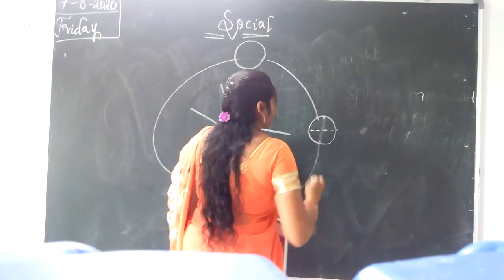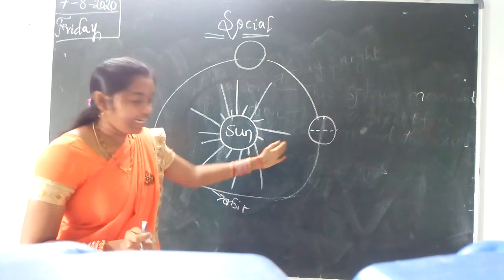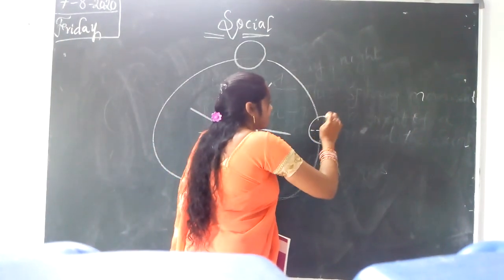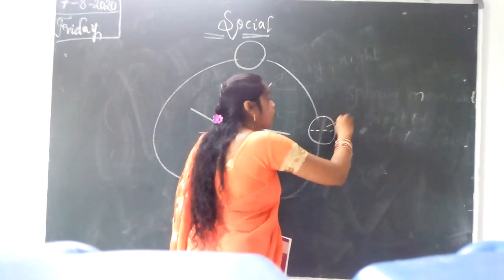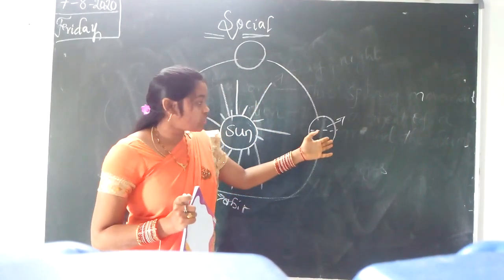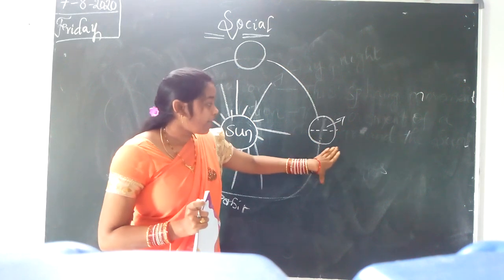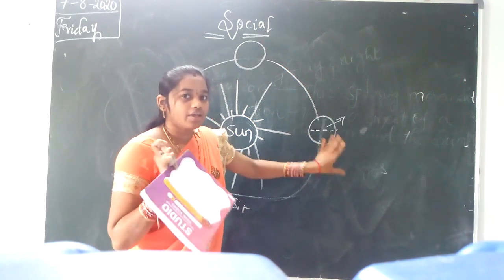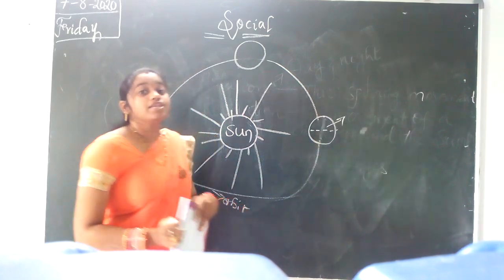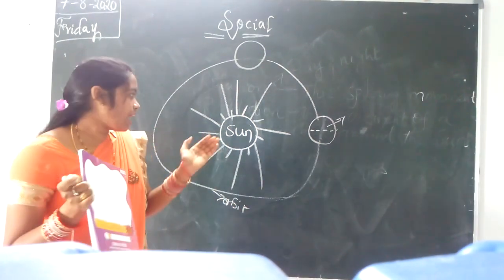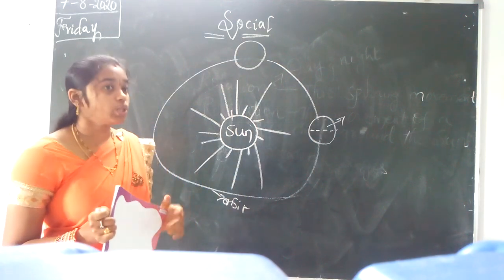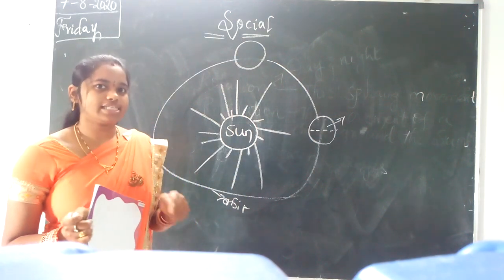The Earth is tilted towards the sun. The part that tilts towards the sun gets more heat. The part that is away from the sun gets less heat. So the part that faces the sun gets more heat, and that causes seasonal changes.